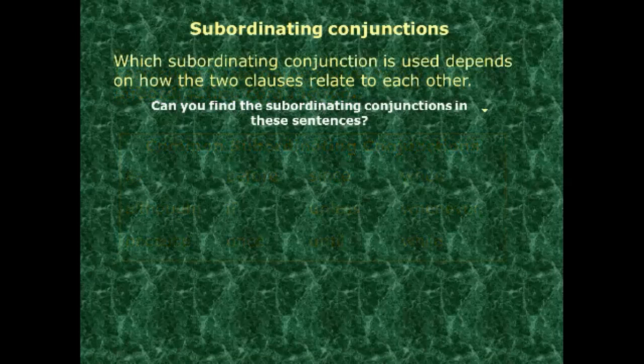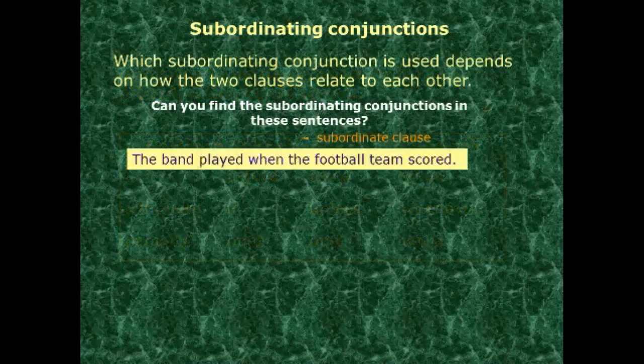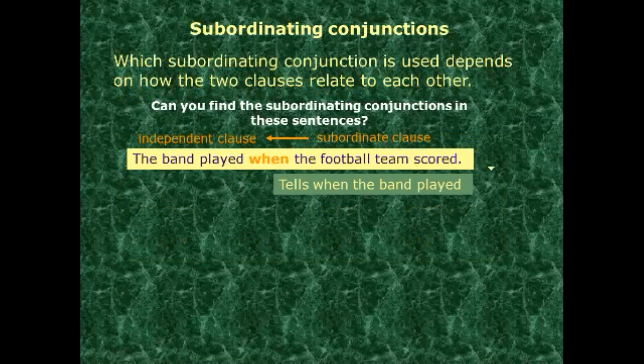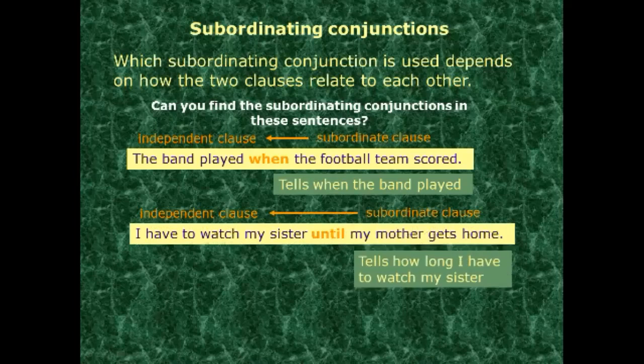Subordinating conjunctions are used depending on how the two clauses relate to each other. Example: 'The ban played' — this is the independent clause. 'When the football team played' — this begins with the subordinating conjunction 'when,' making it a subordinate clause. Another example: 'I have to watch my sister until my mother gets home.' The 'until' clause tells how long — 'until my mother gets home' is the dependent clause answering the question 'for how long?'